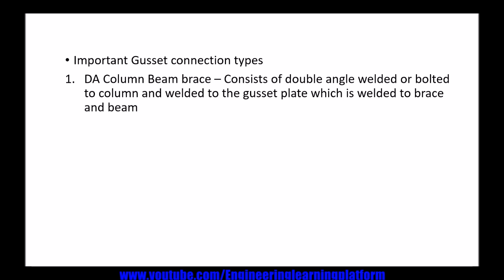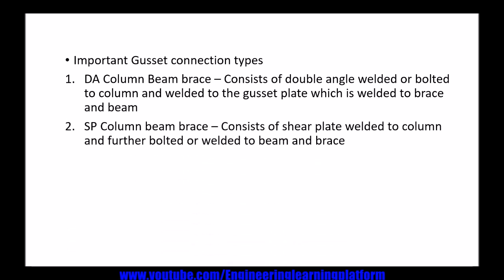Important gusset connection types: double angle (DA) column-beam-brace consists of double angles welded or bolted to the column and welded to a gusset plate, which is welded to the brace and beam. Shear plate column-beam-brace consists of a shear plate welded to the column and further bolted or welded to the beam and brace.